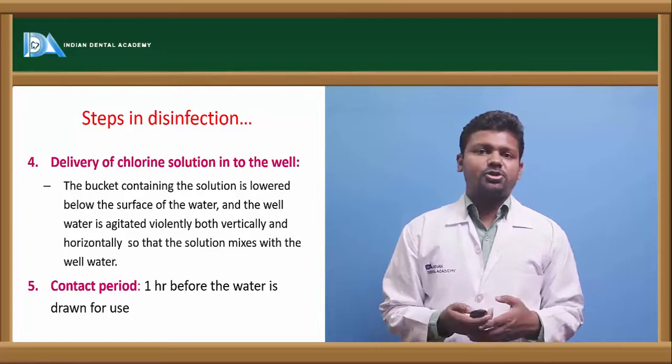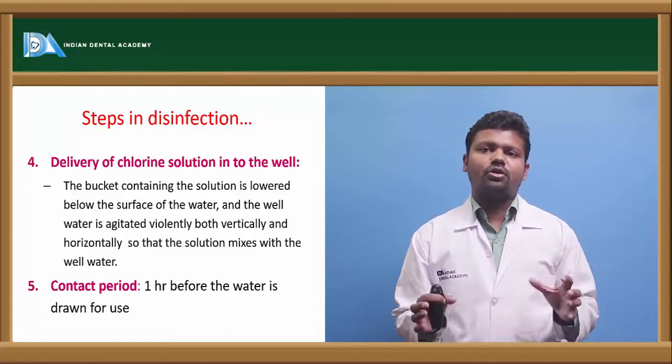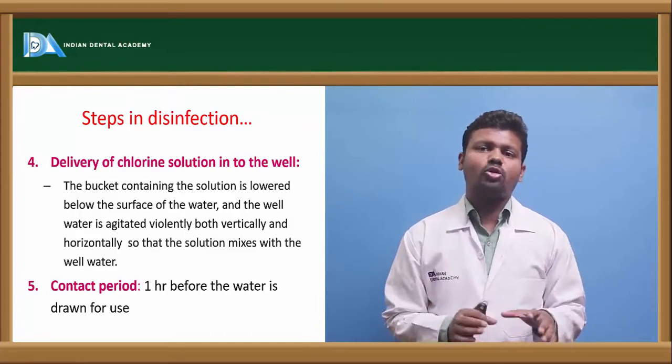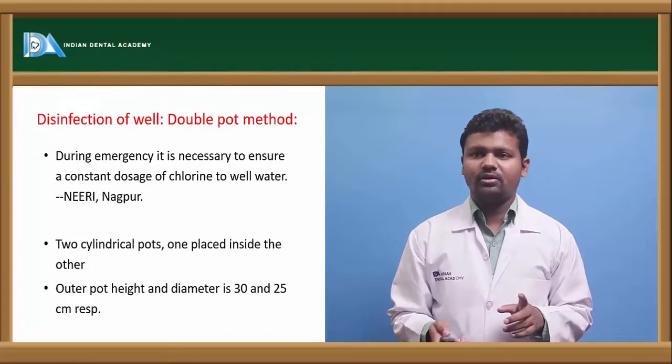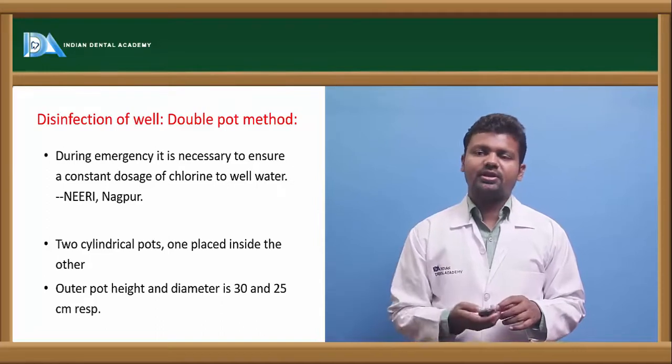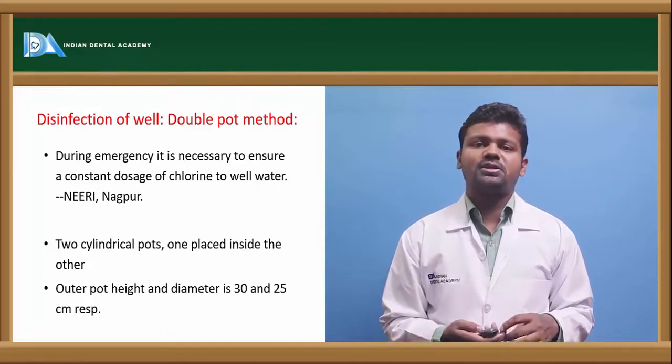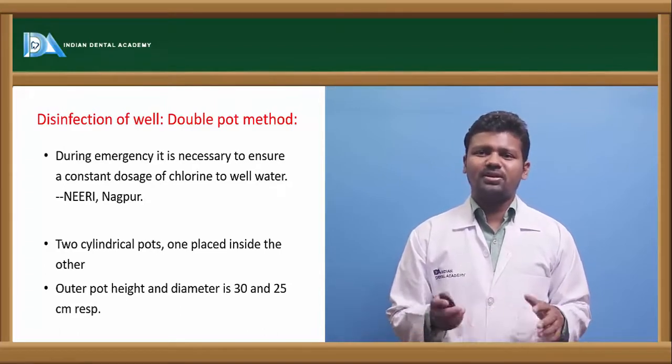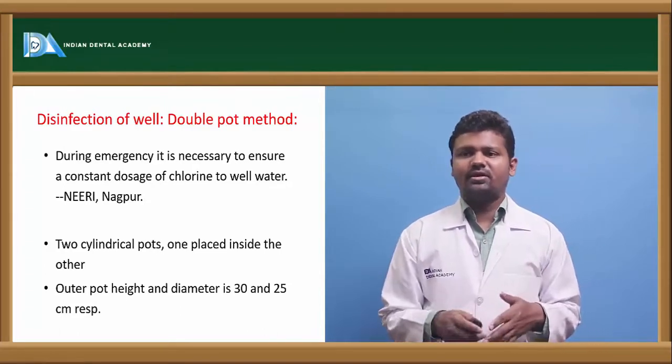The contact period should be 1 hour before the water is used. The placement of bleaching powder in the bucket which we have placed at the bottom of well should be there for 1 hour. The other method is double pot method. It is used in National Engineering Environmental Research Institute of Nagpur. Two cylindrical pots are placed, one inside the other.